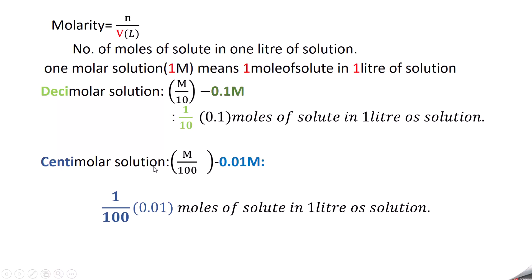Centimolar solution is 1/100 mole of solute taken in 1 liter — that is 0.01 mole of solute in 1 liter. That is what we call centimolar solution, represented as 0.01M.